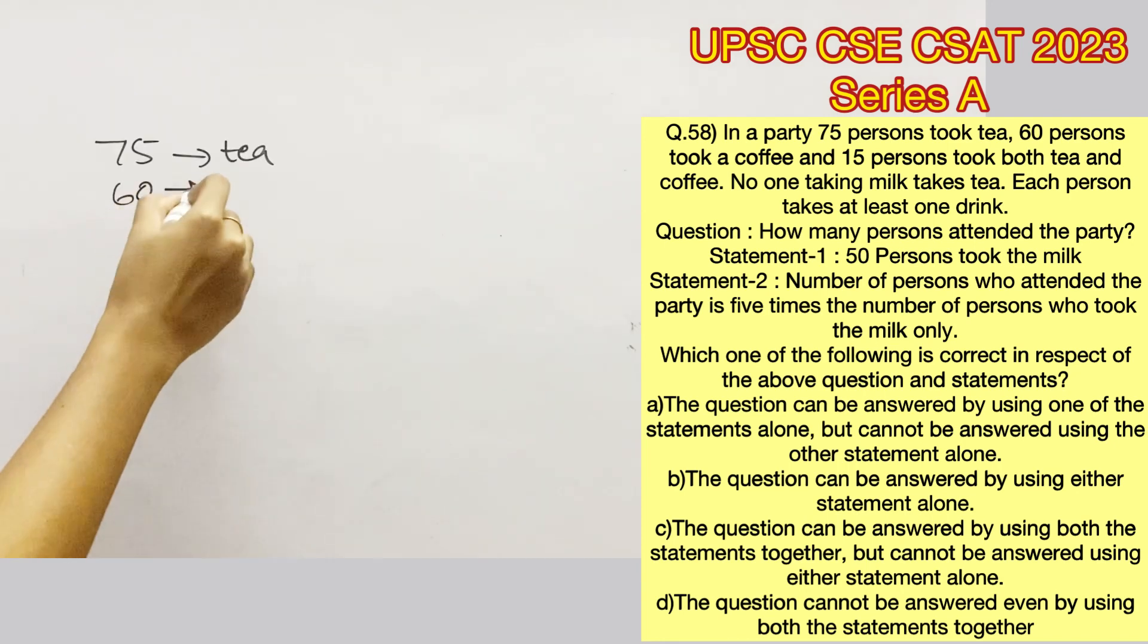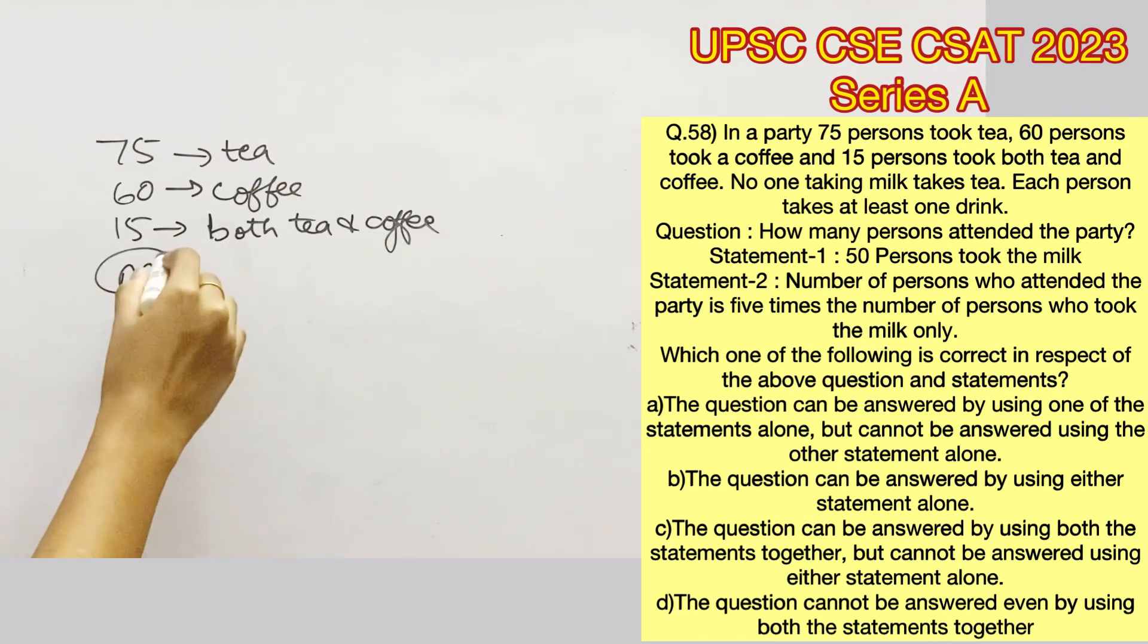It is given that in a party 75 persons took tea, 60 persons took coffee, 15 took both tea and coffee. No one taking milk takes tea. Each person takes at least one drink.